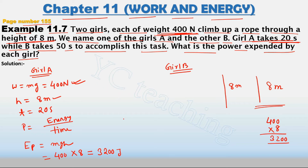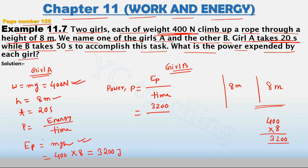Now we have to find the power. Power P equals potential energy EP divided by time. EP is 3,200 Joules and time is 20 seconds. So power of girl A = 3200 ÷ 20 = 160 Watts.